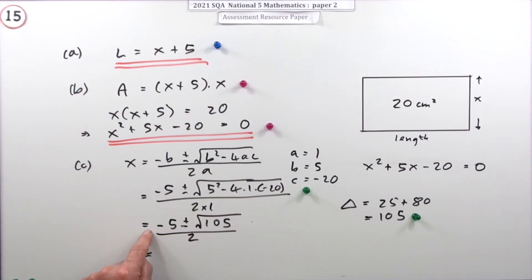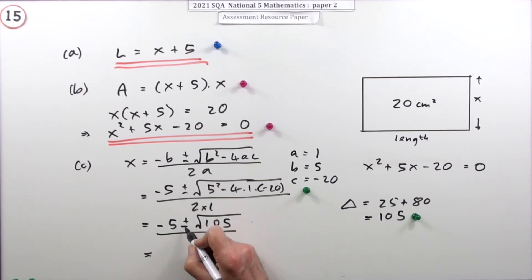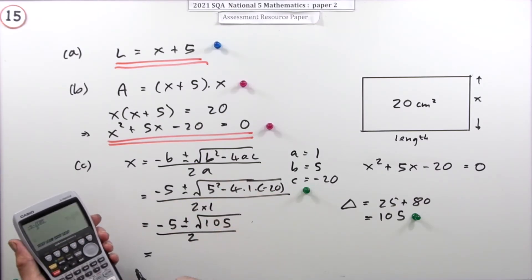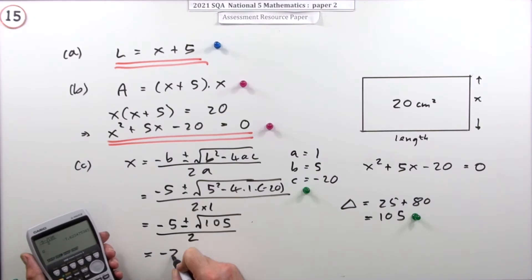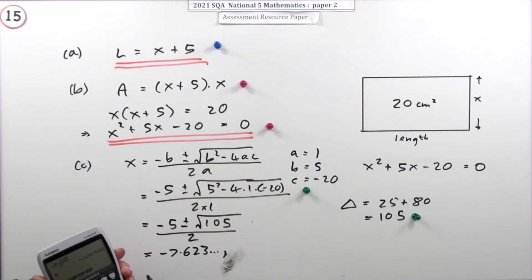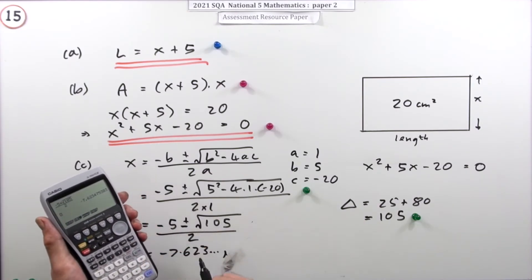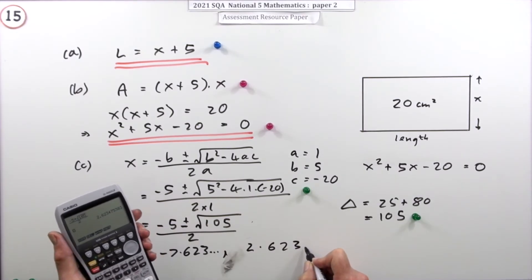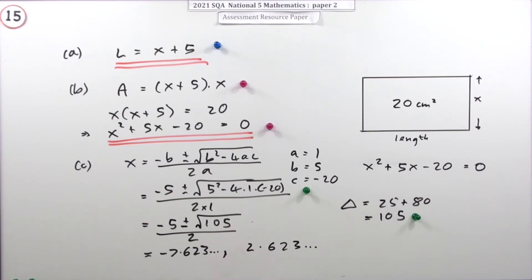Strictly speaking the answer will be negative 5 plus that upon 2 because x is positive, but we put both down. Do the calculation with the minus first since that gives the smaller value: you get approximately negative 7.623. Then do it with the plus: you get approximately 2.623. Doing that calculation gets a mark.